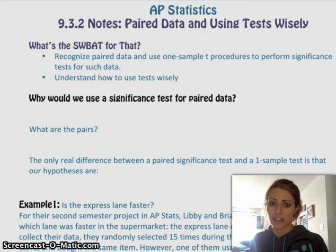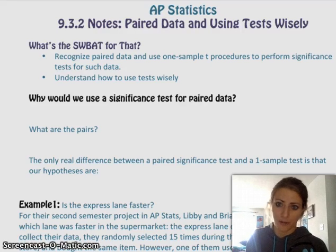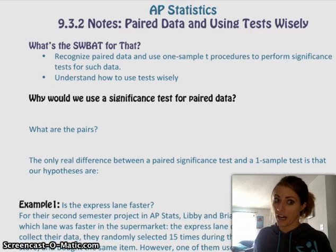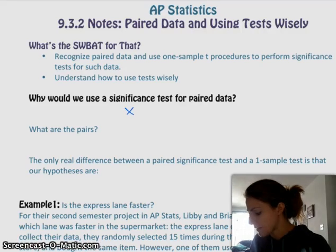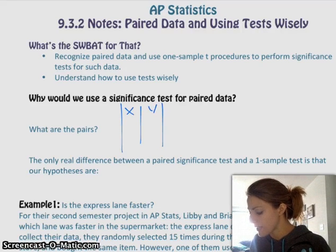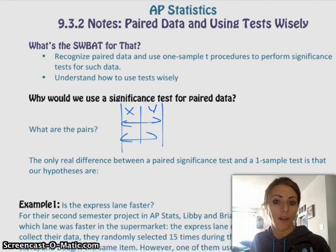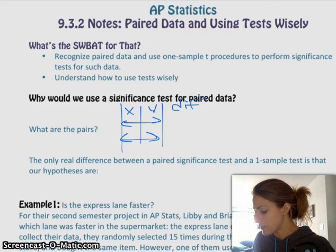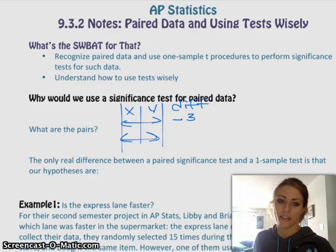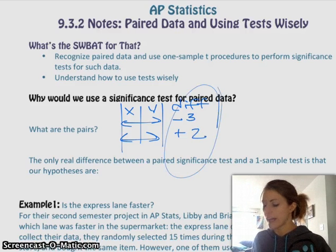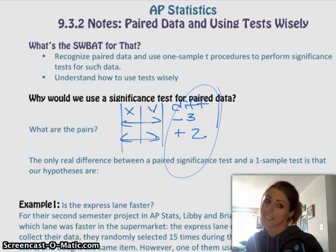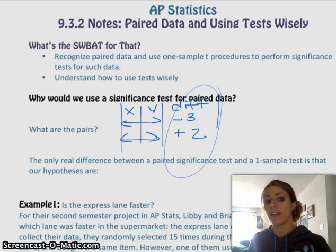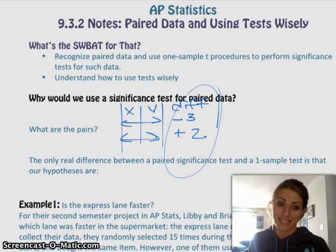So number one: paired data. Why would we do a significance test for paired data? Paired data is when you have two different things and you want to compare them and see if they're different or not. You might have a list of some x stuff and then a list of some y stuff, and you want to compare them. If x and y are approximately the same, then the difference should be, on average, 0. And if they are different, then it's not going to be 0.